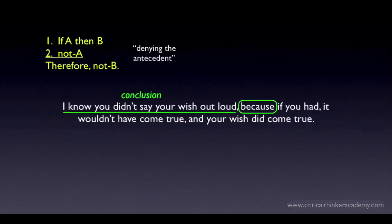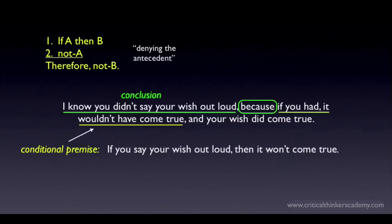So what is the conditional premise? This is the conditional premise. In the original, it reads: if you had, it wouldn't have come true. To make the antecedent explicit, you need to clarify what it refers to — it refers to your wish. I've rewritten the conditional in the present tense because it will sound more natural in standard form, but you're not altering the content in any significant way. What we have left is the phrase 'and your wish did come true.' The 'and' isn't part of the claim. The claim is: your wish did come true. This is the second premise.